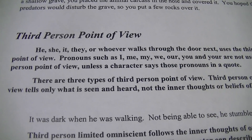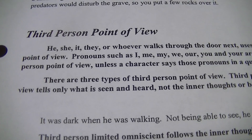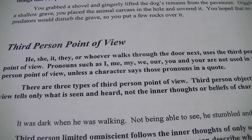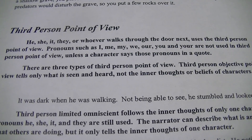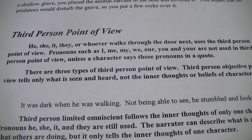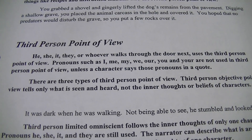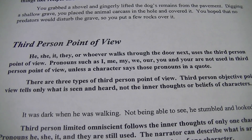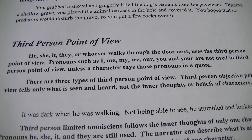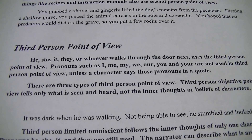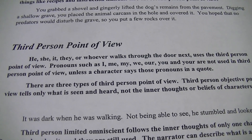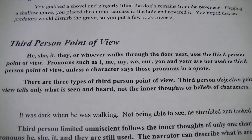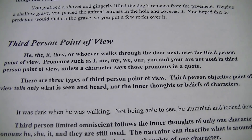Third person point of view — it's like the third person that joins the conversation. So he, she, it, they — whoever walks through the door next uses the third person point of view. We're going to use pronouns like they, he, she — instead of I, me, my, we, or you and yours. Those are not used in third person point of view because they include you and I. He, she, Dr. Smith — that's third person point of view.